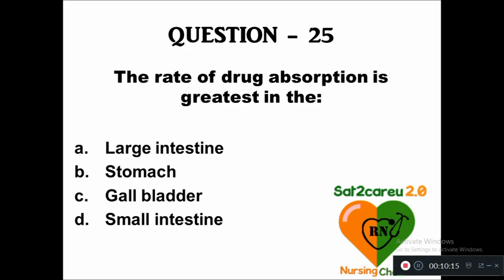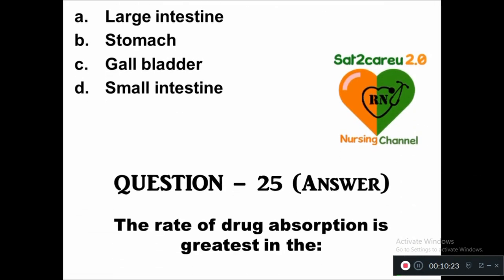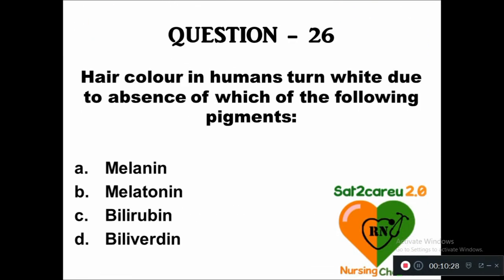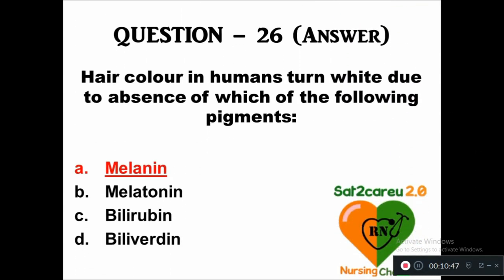Question 25: The rate of drug absorption is greatest in — option A: large intestine, B: stomach, C: gallbladder, D: small intestine. The rate of drug absorption is greater in the small intestine. Question 26: Hair color in humans turns white due to the absence of which pigment — option A: melanin, B: melatonin, C: bilirubin, D: biliverdin. The right answer is absence of melanin results in white hair color.